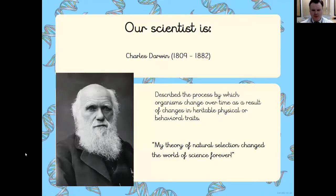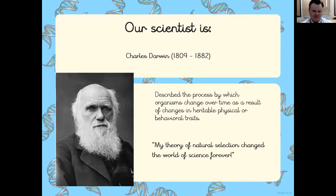Our scientist focus for this topic is Charles Darwin, who lived from 1809 to 1882. He is a very important scientist when it comes to evolution and inheritance, because he described the process by which organisms change over time as a result of changes in heritable physical or behavioral traits. His theory of natural selection changed the world of science forever.